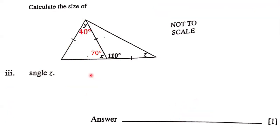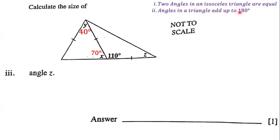Next, our goal is to determine the size of angle Z. We'll use two rules: two angles in an isosceles triangle are equal, and angles in a triangle add up to 180 degrees. Notice that the angle of 110 degrees is inside this particular triangle, and this is an isosceles triangle. We know because this line and this line each have one stroke, indicating that these two side lengths are equal.